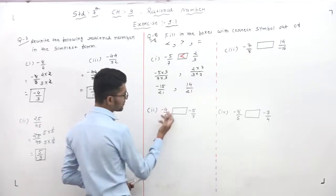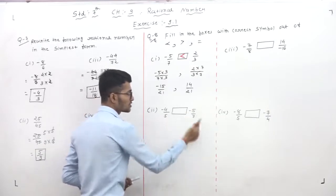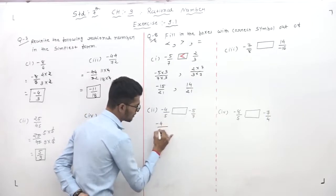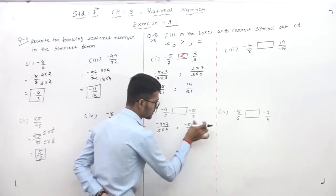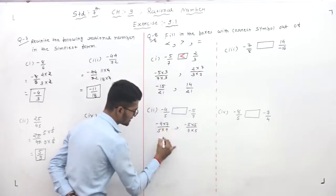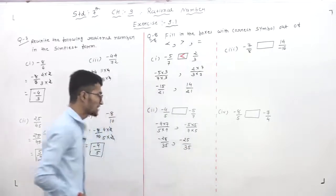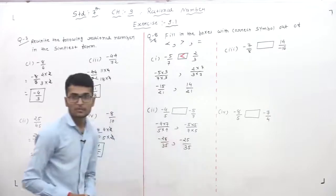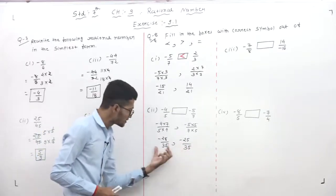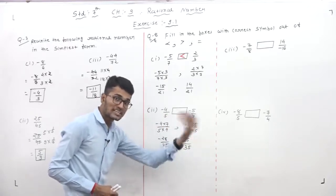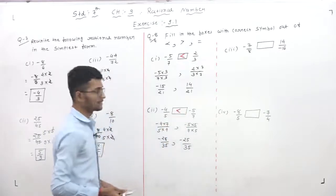Next: minus 4 by 5 and minus 5 by 7. Different denominators, so multiply minus 4 by 5 by 7 to get minus 28 by 35, and multiply minus 5 by 7 by 5 to get minus 25 by 35. Denominators are now same. Comparing minus 28 and minus 25: on the negative side, the smaller digit means the bigger number, so minus 25 is the bigger number. Put the less than sign for minus 4 by 5.